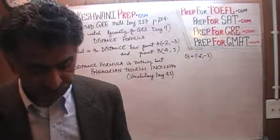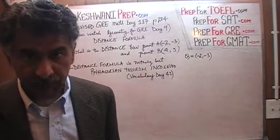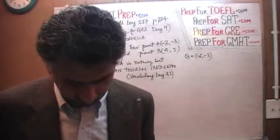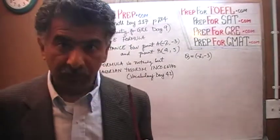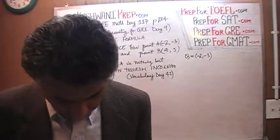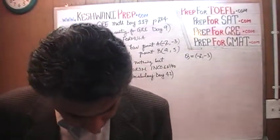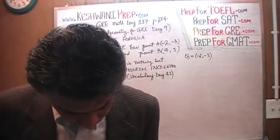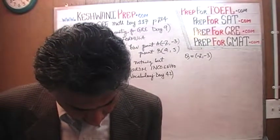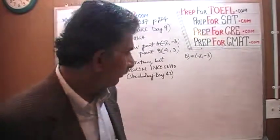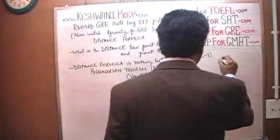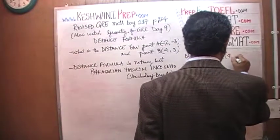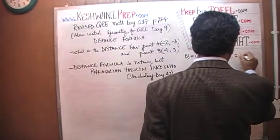This question does not have a number — as I said, it is at the very bottom of page 234. And R, we are told, is 4 and 1.5. R is 4 and 1.5.